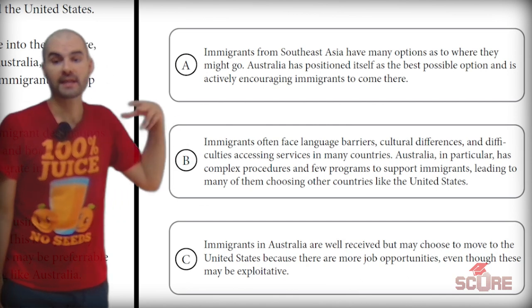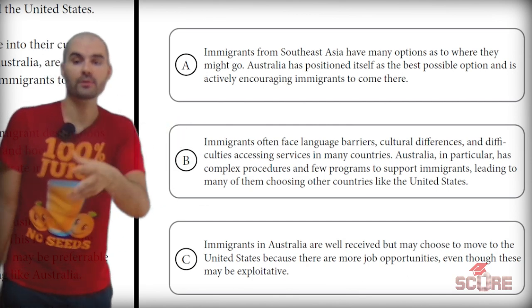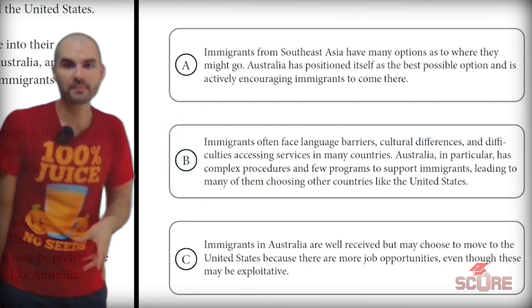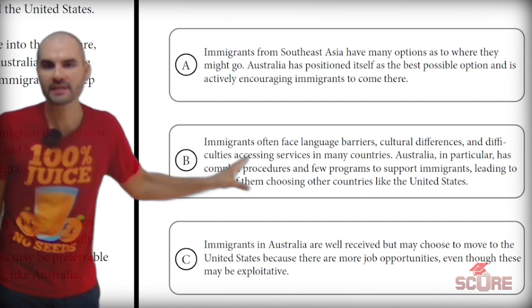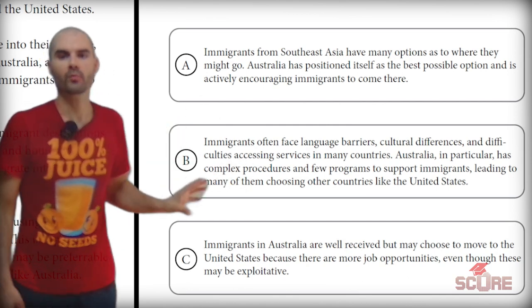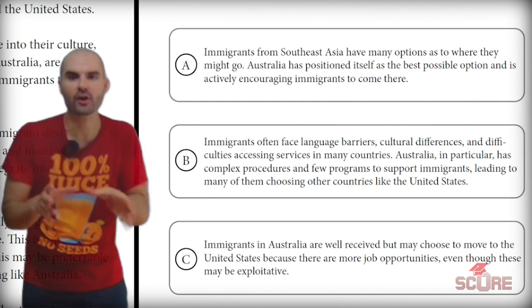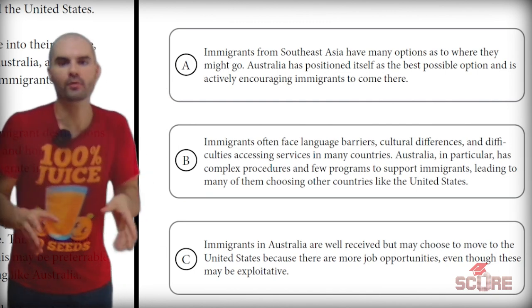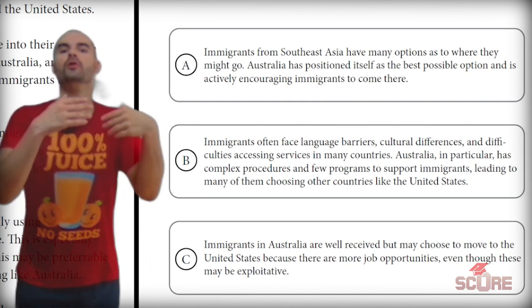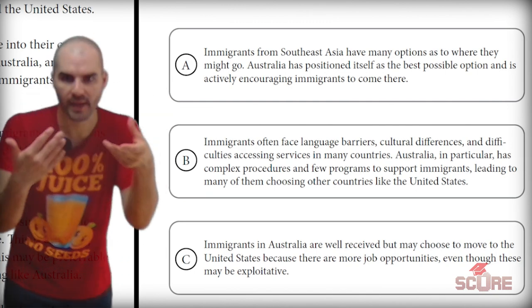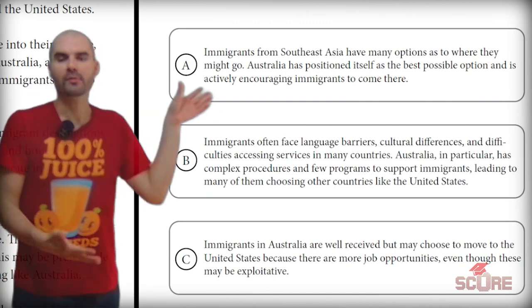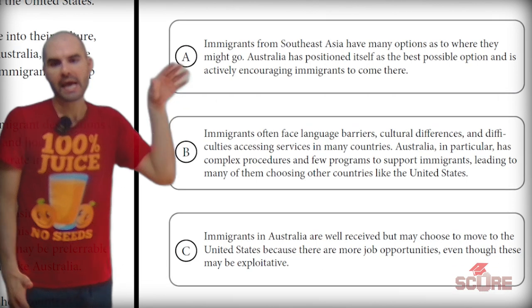B says immigrants often face language barriers and goes on to explain problems with them. I can already tell that's wrong — we're not focusing on the problems immigrants have, we're looking for Australia's role. So I'm going to eliminate B.